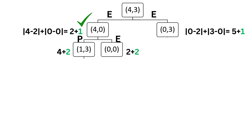State (0, 0) has the least cost so A* chooses it, but from here there are no new states — filling jug A leads back to (4, 0) and filling jug B leads back to (0, 3), both already explored. So we look for the next least cost node, which is (0, 3) with a cost of 6, expanded before node (1, 3).